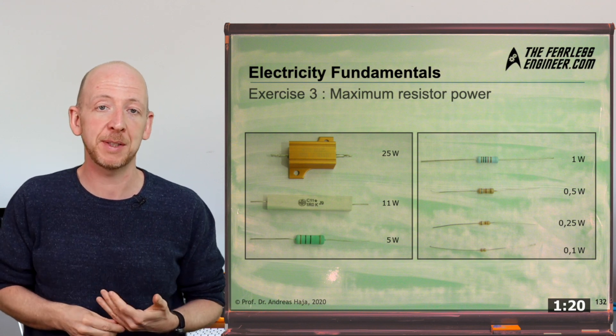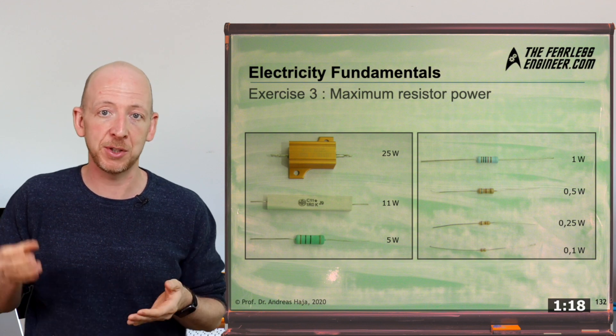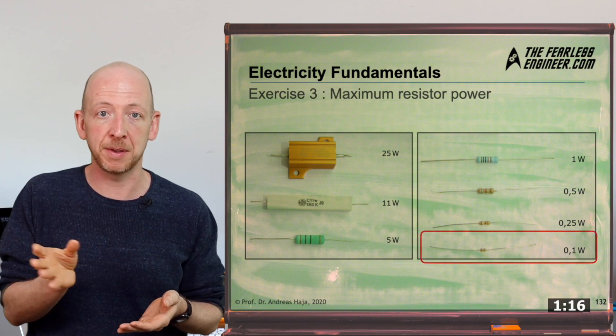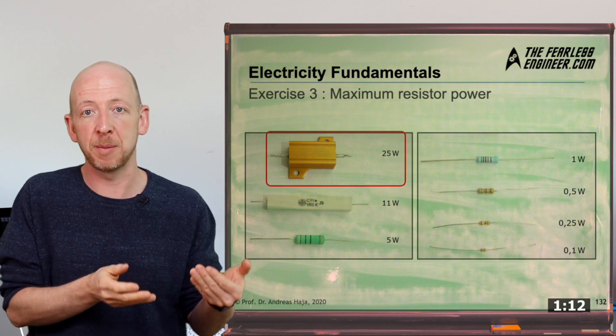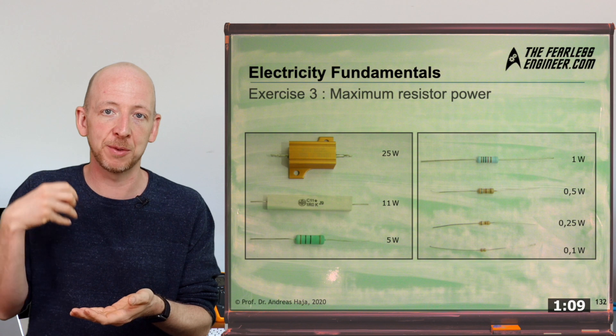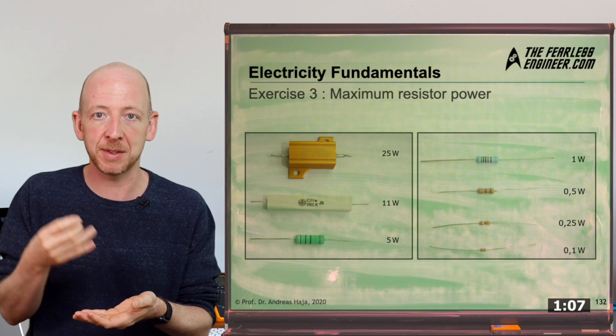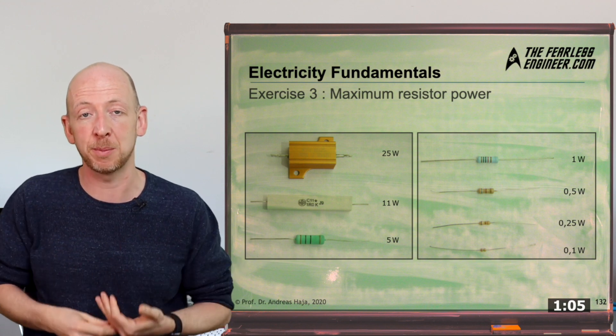On the photo here you can see different power ratings of various resistor types ranging from 0.1 watts for the very small resistor up to 25 watts for the power resistor with a metal casing. In this section we will now answer the question of how a resistor must be dimensioned so it doesn't overheat too much and get destroyed in the process.